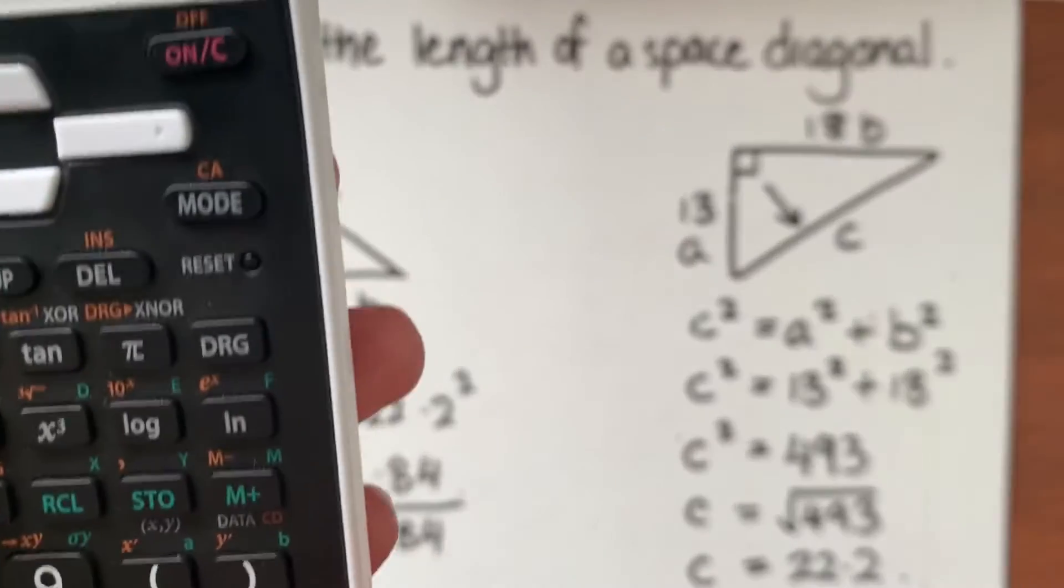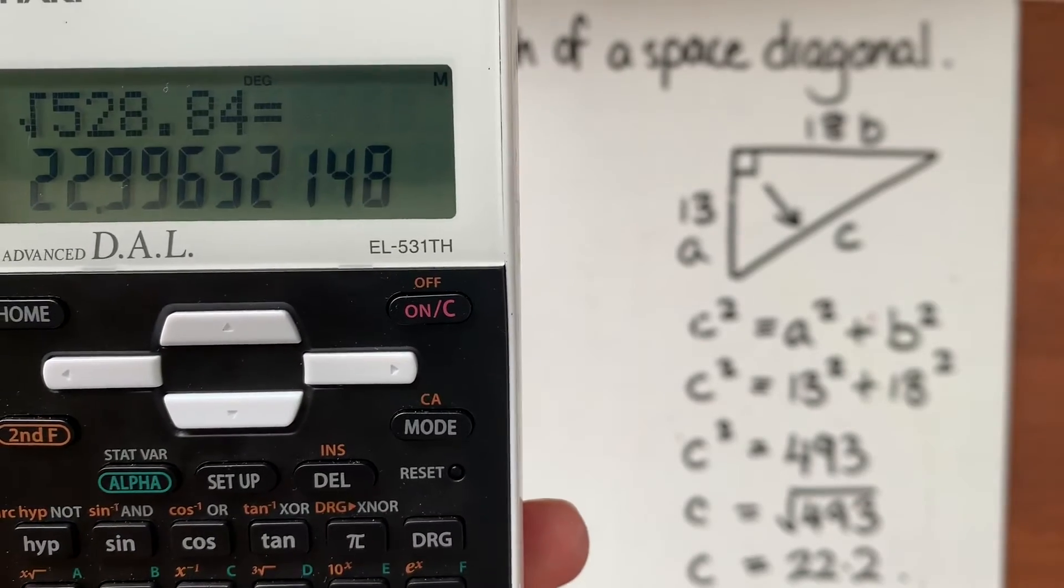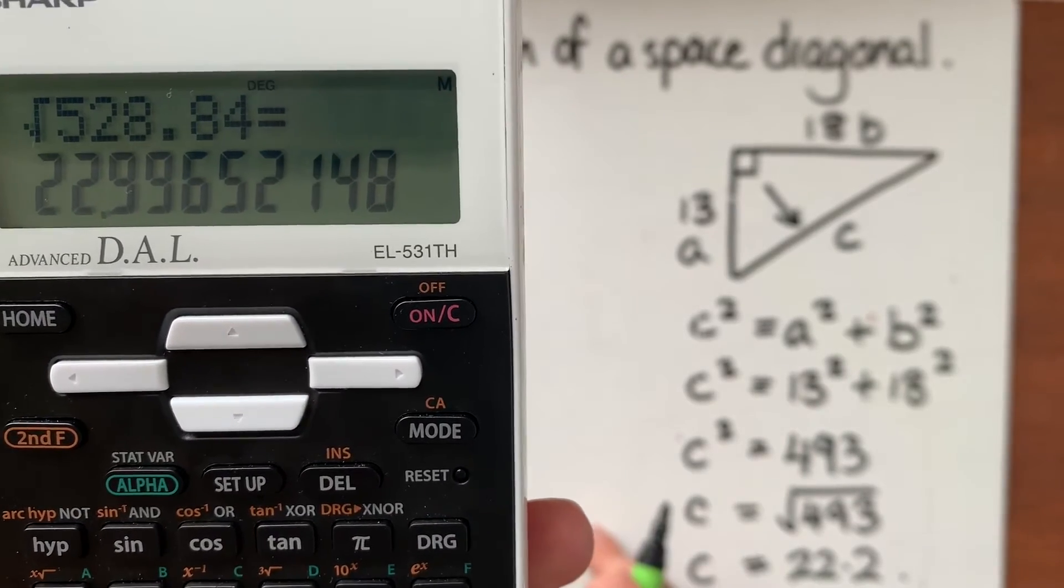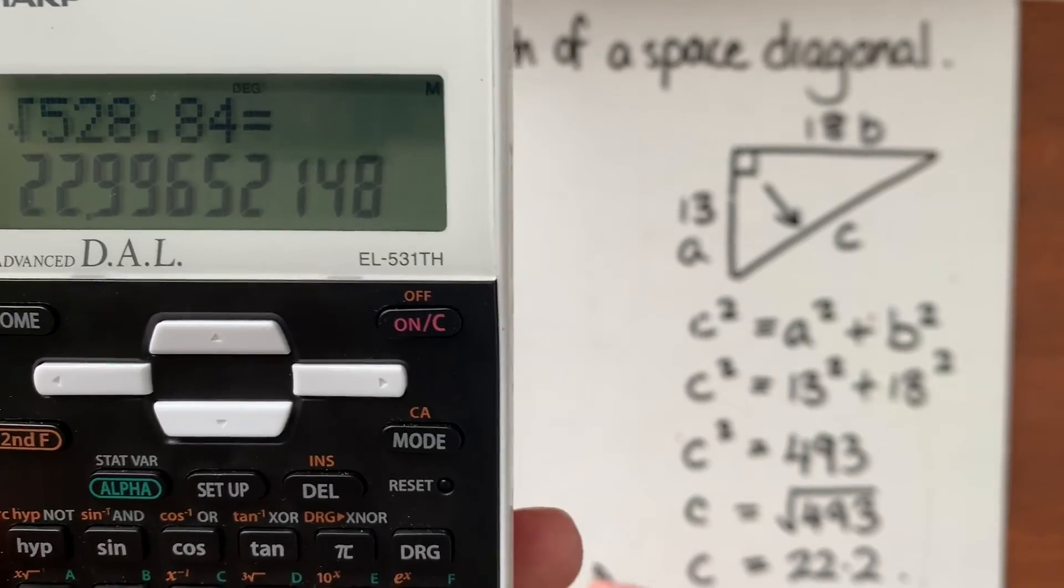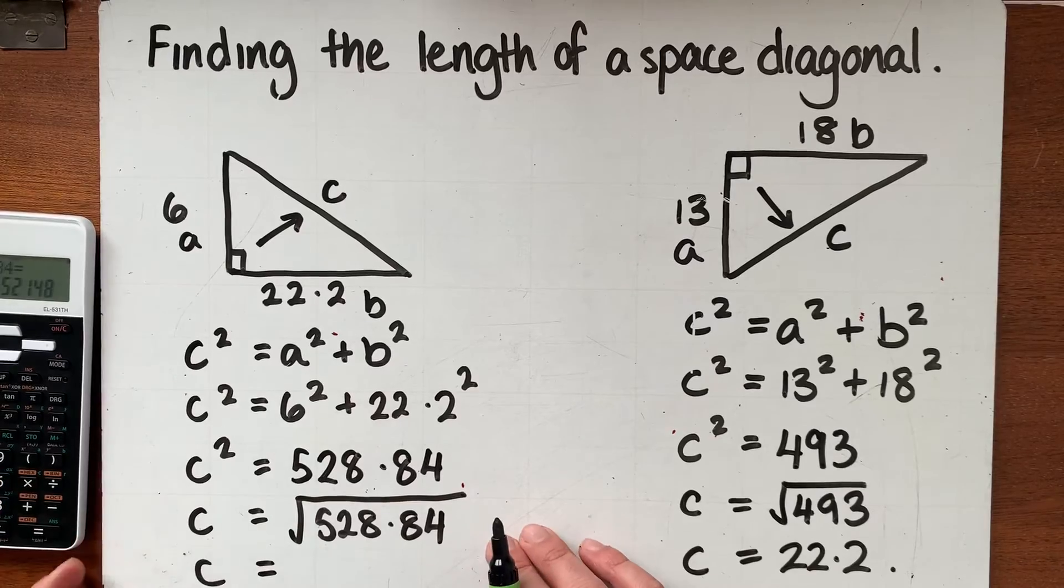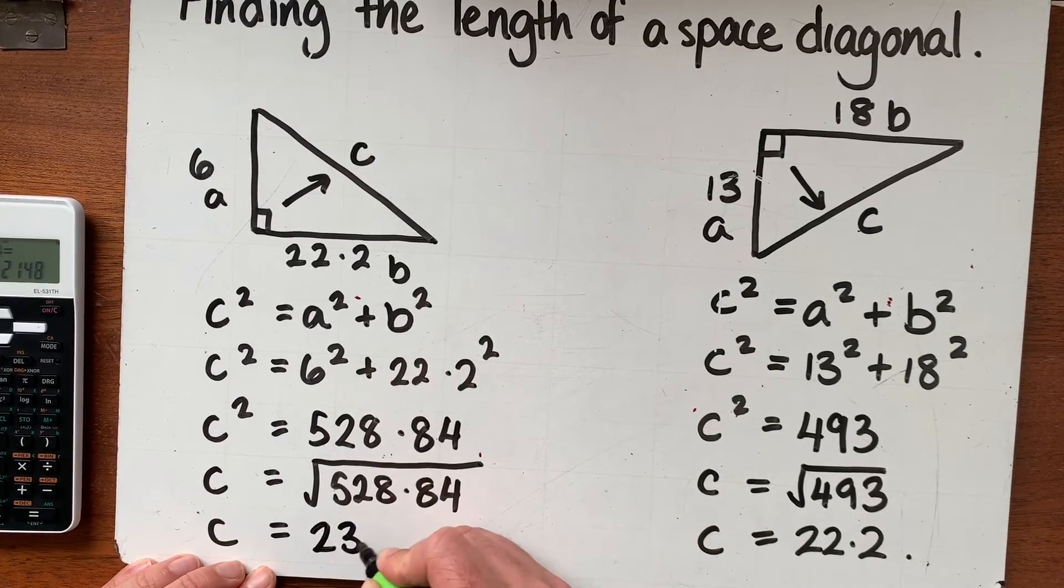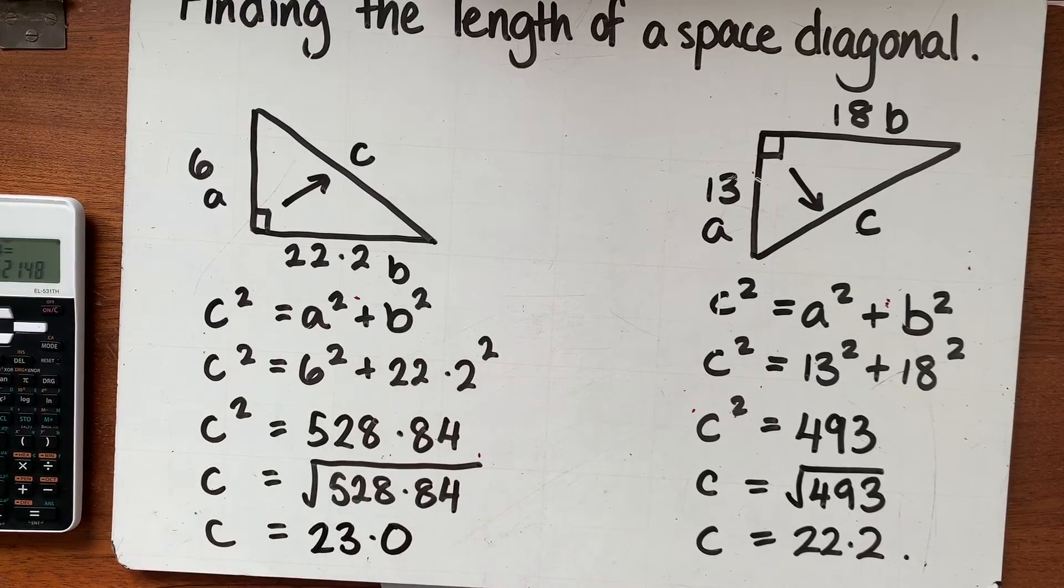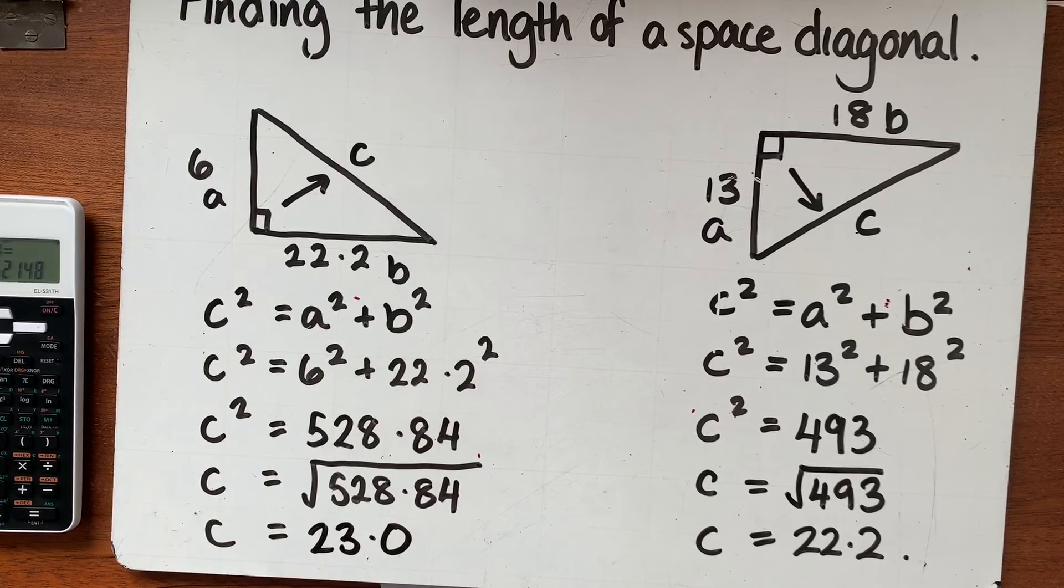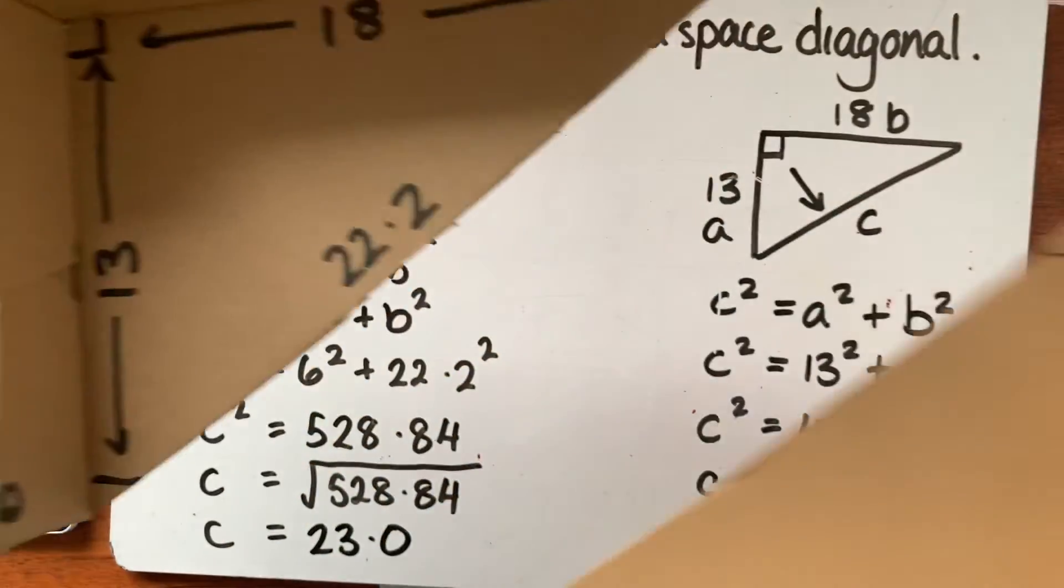And to find C I need to square root that 528.84 and if we have a quick look at that we get a solution of 22.996. I would write that down first. I'm a little bit out of space so I am going to go straight to 23.0 correct to one decimal place.